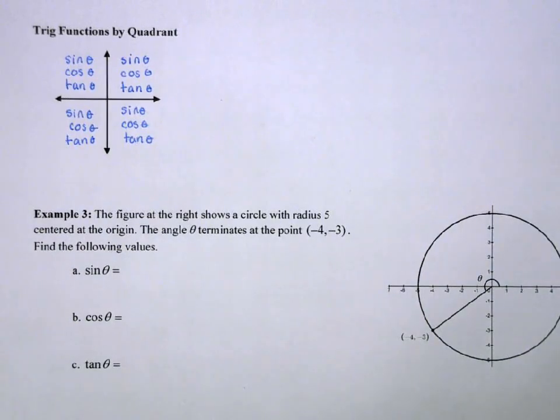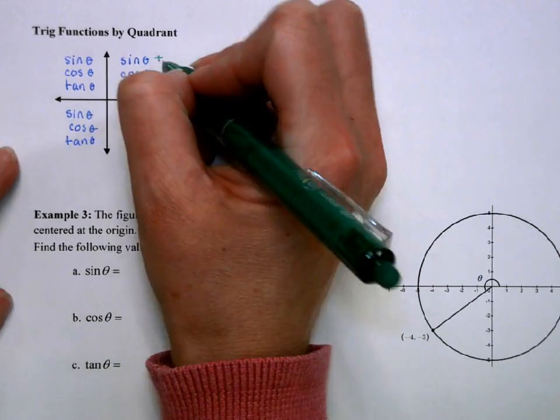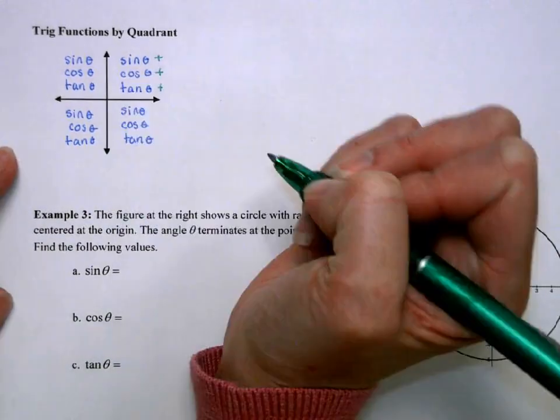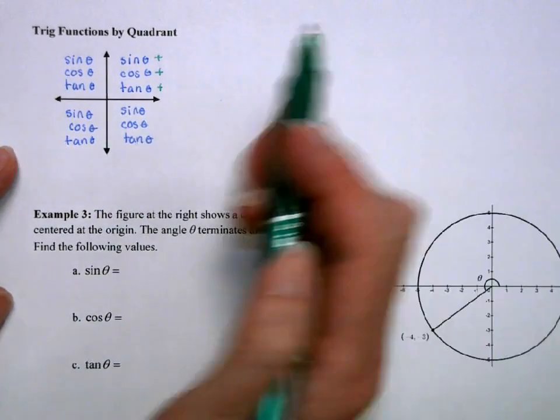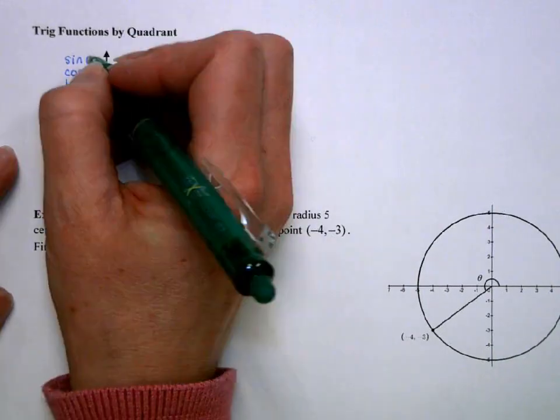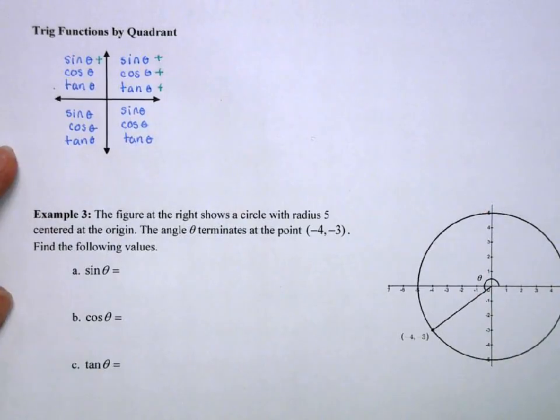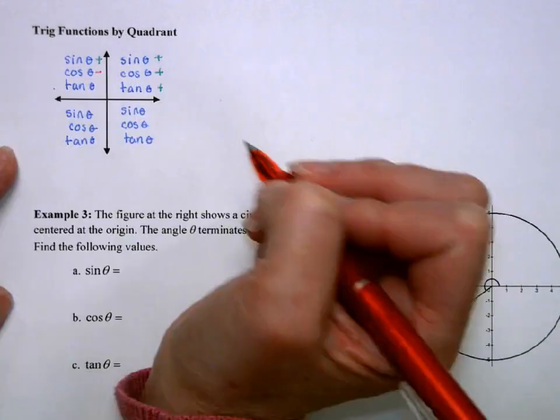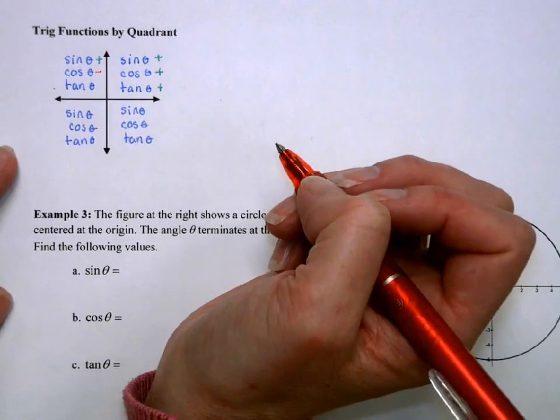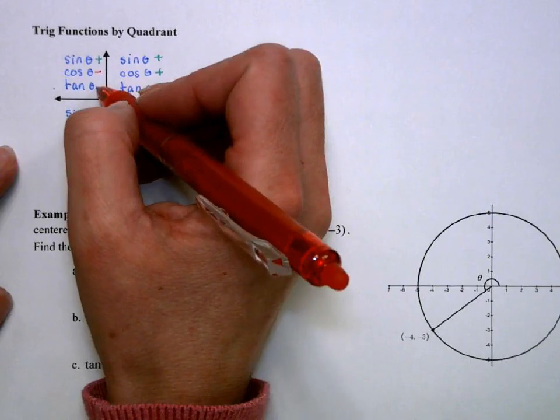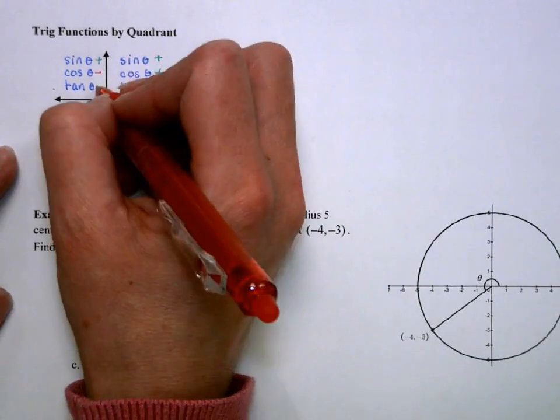So, in the first quadrant, both sine and cosine are positive. So, sine is positive, cosine is positive, and tangent is positive. In the second quadrant, my sine is positive because my y values are positive there. But my cosine is going to be negative because my x values are negative there. And my tangent is going to be the y divided by the x, so it will also be negative.